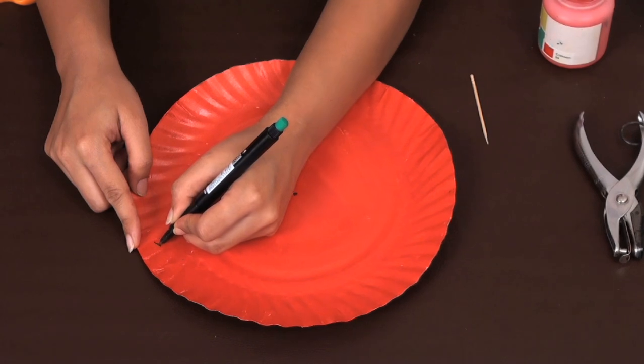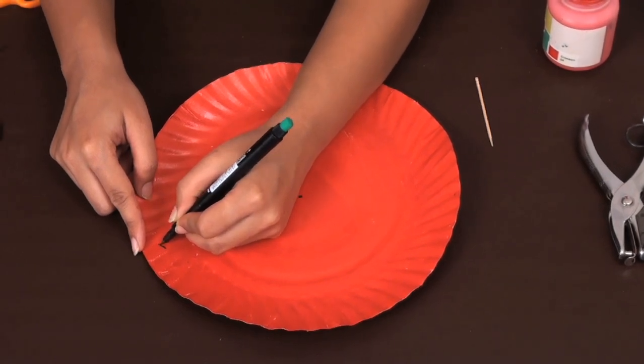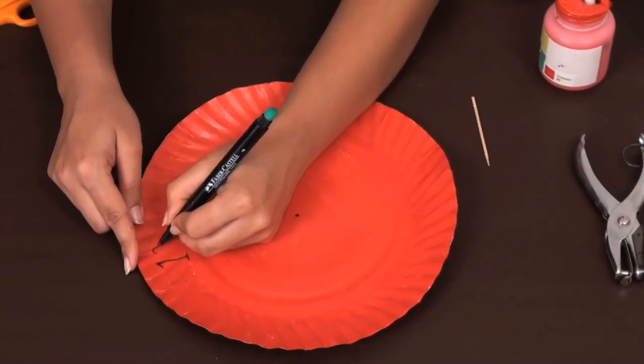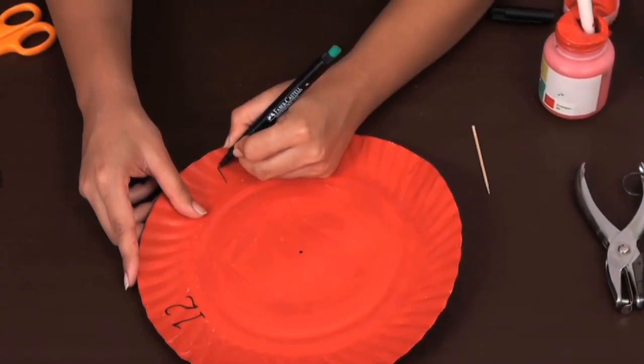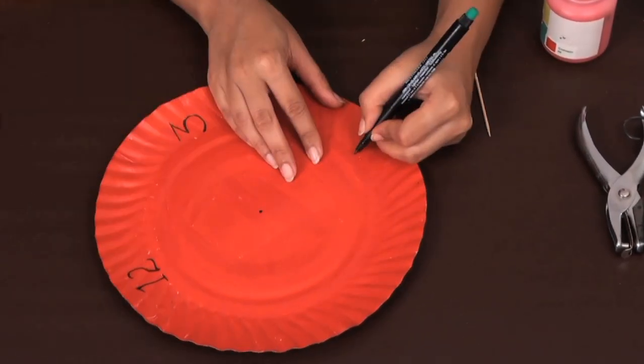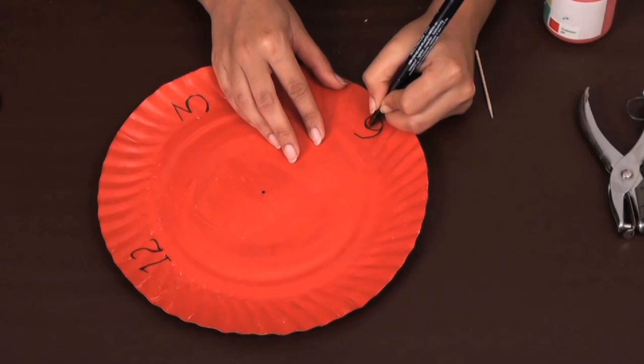Now with the black marker, write the numbers. It's a good idea to write out twelve, three, six, and nine at the four main points of the clock first. And you can fill in the rest of the numbers later.